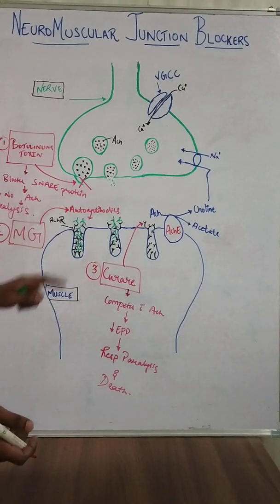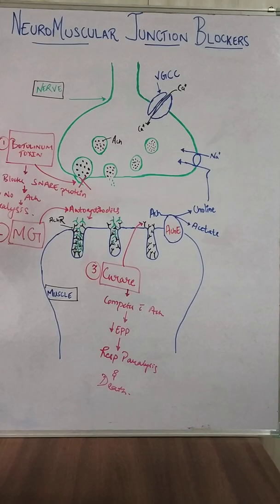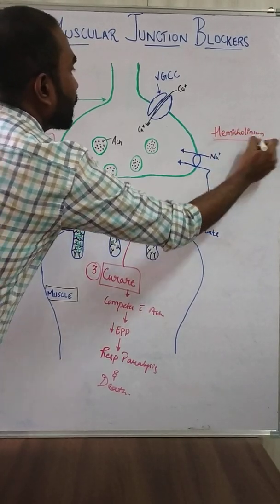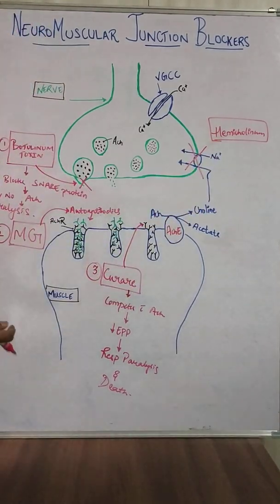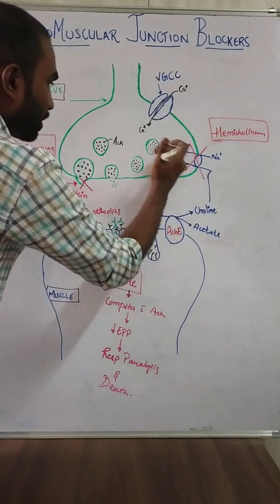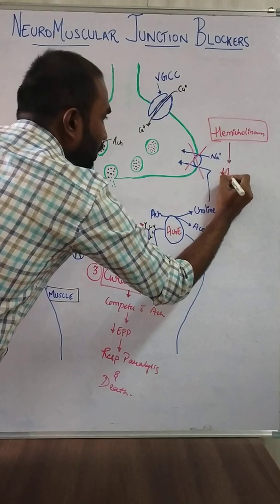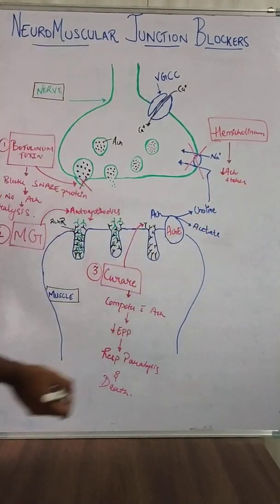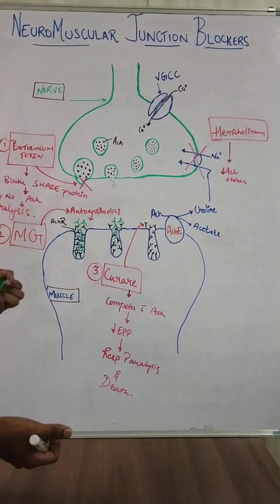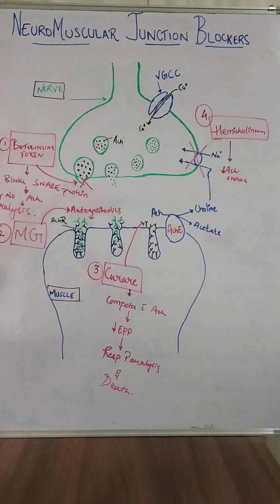The fourth agent is hemicholinium. Hemicholinium blocks the sodium and choline co-transporters. Once these co-transporters are blocked, acetylcholine cannot be synthesized in the presynaptic terminal, resulting in depletion of acetylcholine stores. This depletion causes delay in neuromuscular junction events.